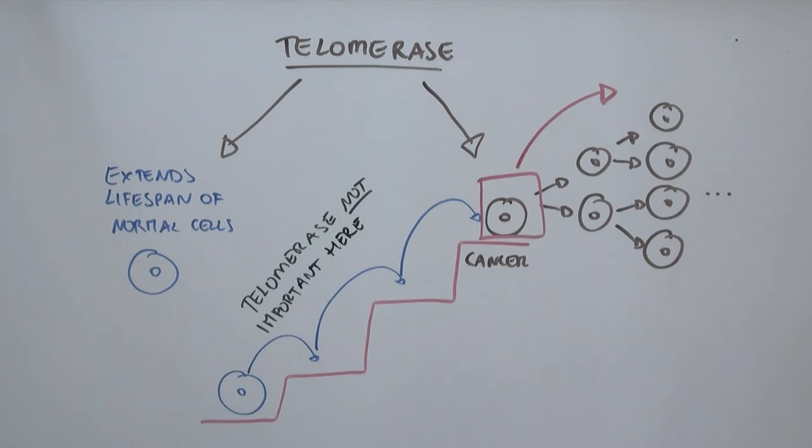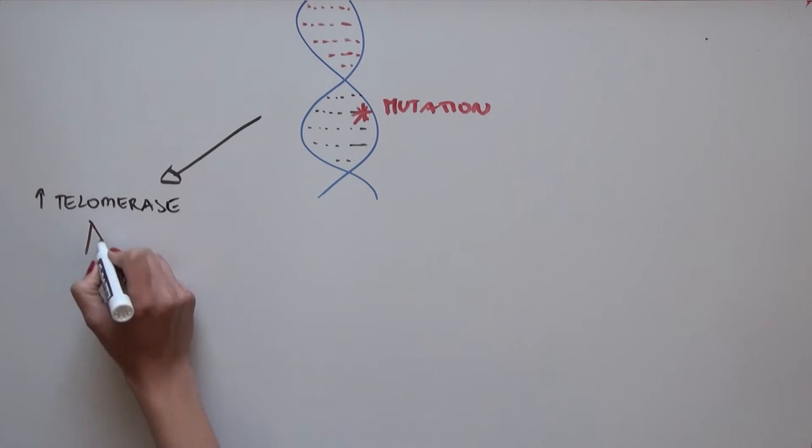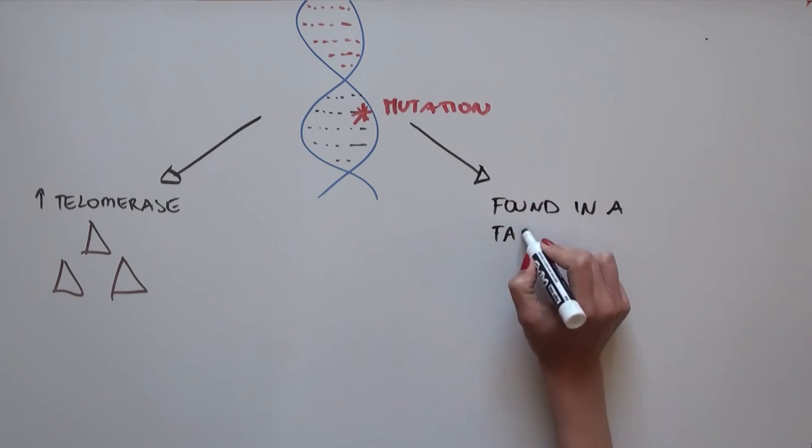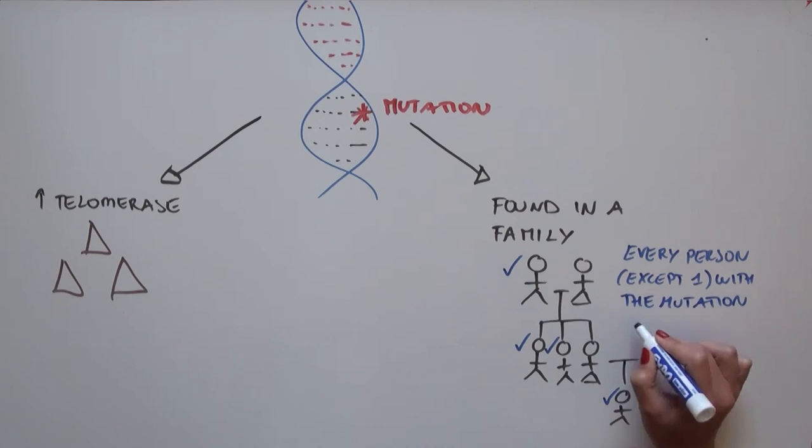So how does this finding contribute to this view? As I mentioned, the mutation discovered here increases telomerase levels in cells, and was found in a family where every person, except for one, that had the mutation developed cancer, and mostly melanoma.